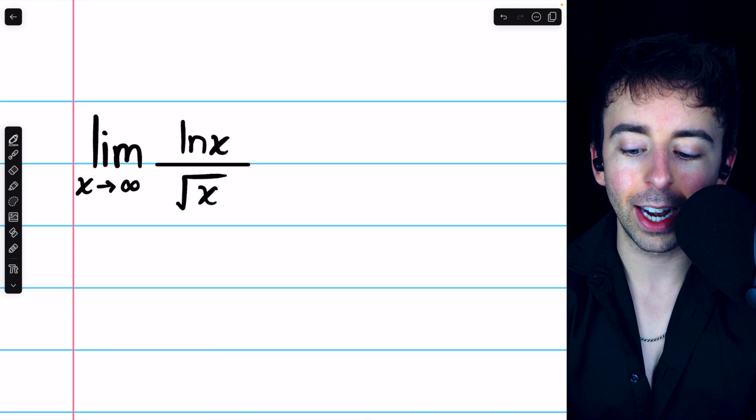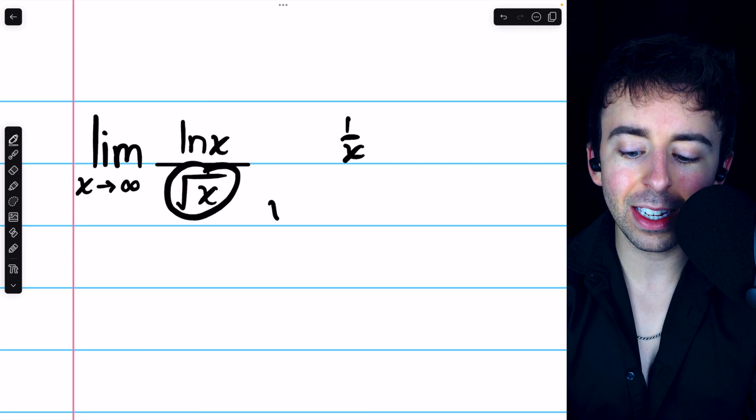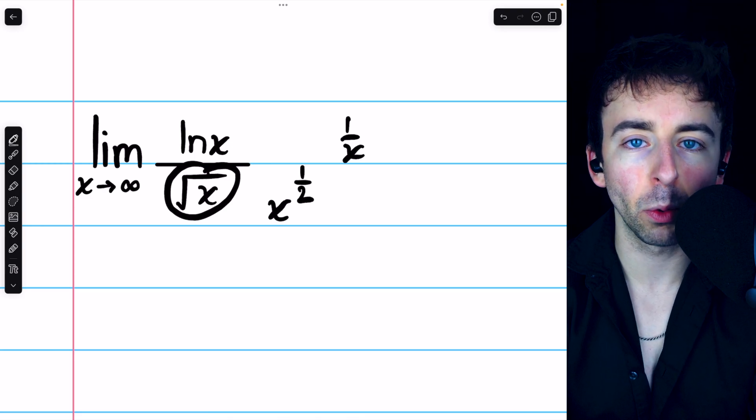The derivative of ln x is 1 over x, and the derivative of the square root of x is most easily found by rewriting it as x to the 1 half, and then applying the power rule.